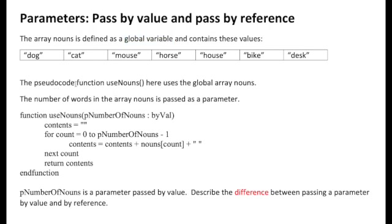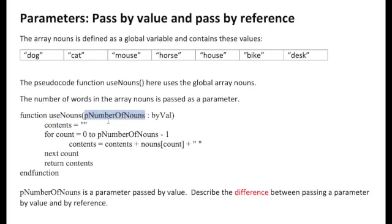The function use_nouns is defined below and it uses the global array nouns. The number of words in the array is passed as a parameter to the function use_nouns. The parameter is named p_number_of_nouns — I like to use the letter 'p' in front of a parameter to remind me I'm dealing with a parameter as opposed to a global variable. We can see that it is defined by value.